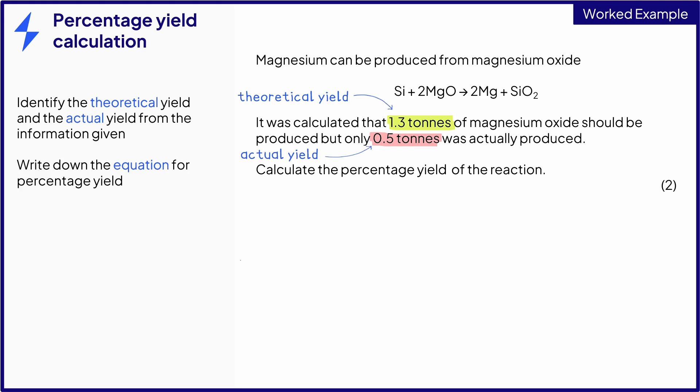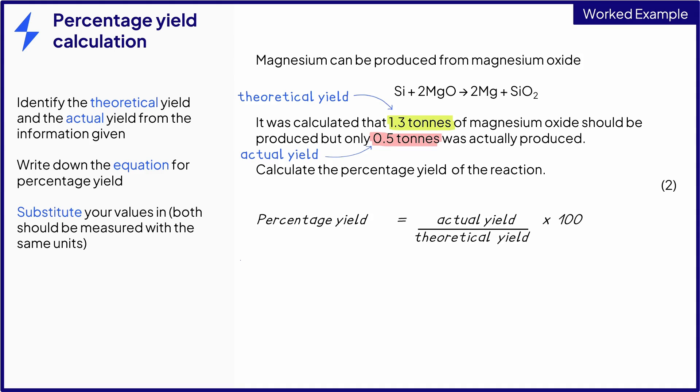Write down the equation for percentage yield. Then, substitute in the values that you know. Now, as percentage yield is a comparison between the actual and theoretical yields, you must make sure that these values have the same units. In this case, they are both measured in tons. So we can substitute these in without having to worry about converting either value.